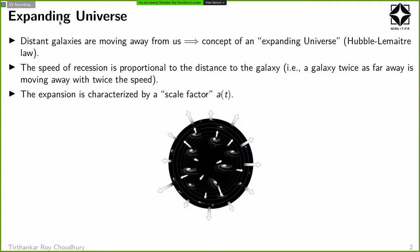If a galaxy is twice as far away from us, it will move away with twice the speed. This gives rise to the nice mathematical formalisms we have to study cosmology. The expansion is characterized by what we call a scale factor, denoted A(t), defined so that A(t) equals 1 today. A would be smaller at earlier times and larger in the future.